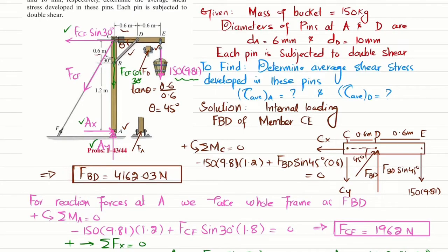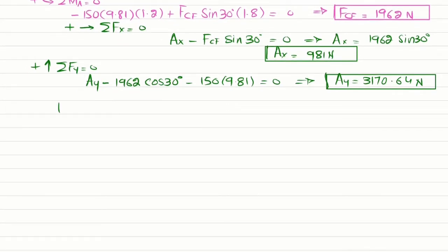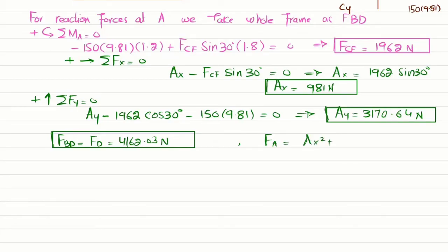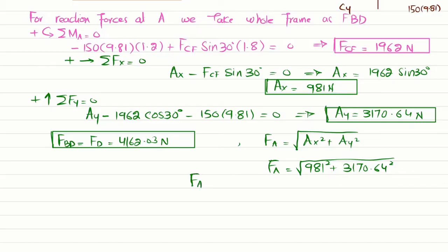Now we have A_x and A_y. The force F_BD acting on pin D equals F_D = 4162.03 N. At A we have components A_x and A_y, so the net force F_A = √(A_x² + A_y²) by the Pythagorean theorem. Substituting: F_A = √(981² + 3170.64²) = 3318.93 N.